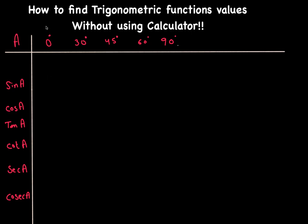Hello guys, in today's video I'm going to go over a trick you can use to find trigonometric function values without using a calculator. We need to make a table with angles 0°, 30°, 45°, 60°, and 90°, and these are the trigonometric functions we're trying to find the values for.